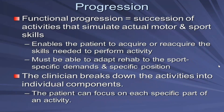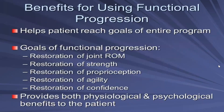Here, functional progression is the succession of activities that simulate actual motor and sport skills, enabling the patient to acquire or reacquire the skills needed to perform an activity. The patient must be able to adapt to sport-specific demands and specific positions. The clinician breaks down the activities into individual components so the patient can focus on each specific part of an activity. The benefits of functional progression include helping the patient reach the goals of the entire program — to restore joint range of motion, strength, proprioception, agility, and confidence — providing both physiological and psychological benefits to the patient.